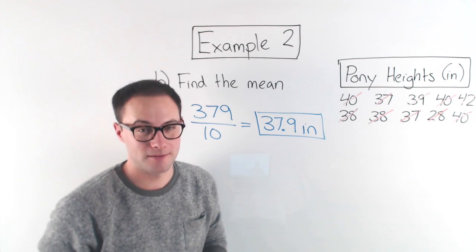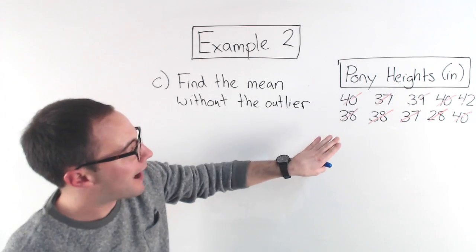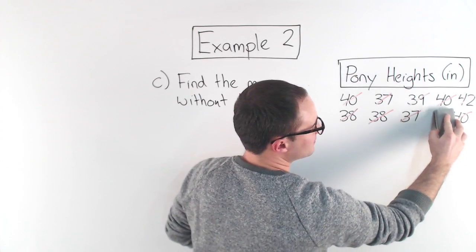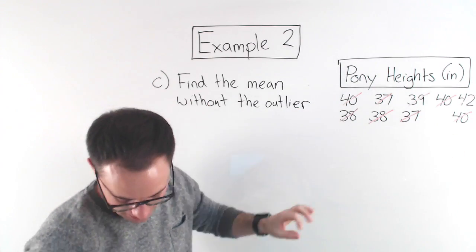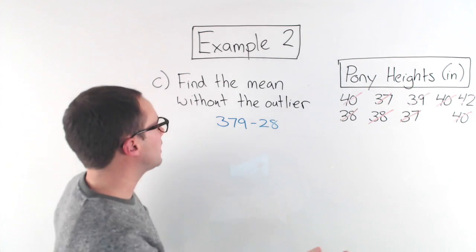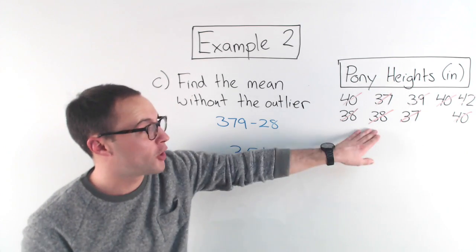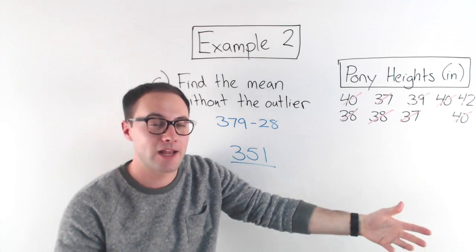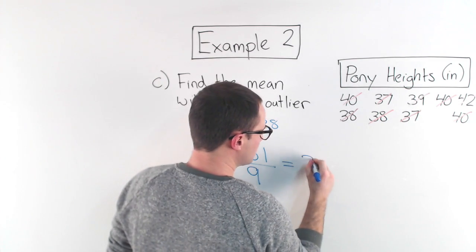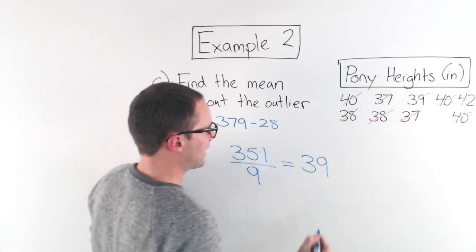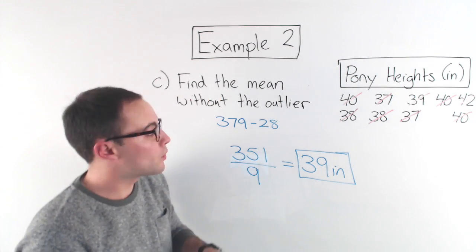Let's try the last part, part C. Here's part C of example two. Find the mean again, but this time without the outlier. So if we remember, our outlier was 28, so I'm going to find it without that. We're not going to include that. So now if we find the sum of all the data, 379 minus 28, because we took it away, I'm going to get 351 divided by, now notice there aren't 10 values. We got rid of the outlier, so now there's only 9 values. So I'm dividing by 9, and 9 into 35 goes 3 times, then there's 81, 39, and that's 39 inches. So that is my mean without the outlier.